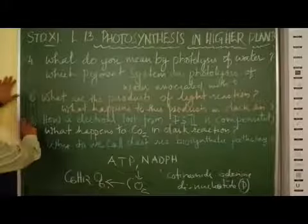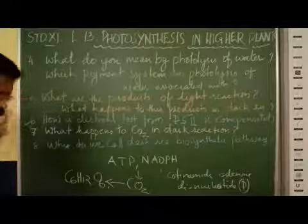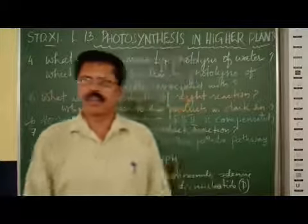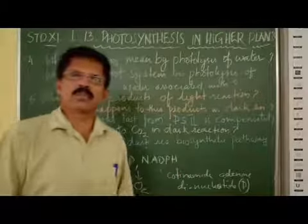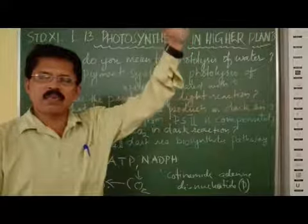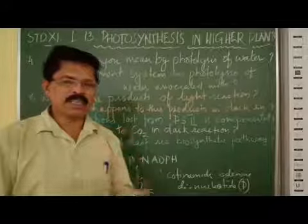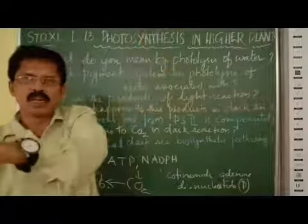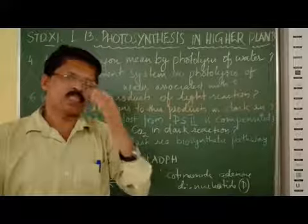Now there is a follow-up question. Only photolysis for PS2 is compensated. Yes, I told you during the light reaction, during non-cyclic photophosphorylation, the two pigment systems are involved: pigment system 2 and pigment system 1. When light falls on pigment system 2, that pigment system 2 gets excited and emits electrons.